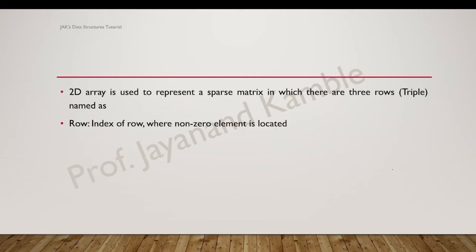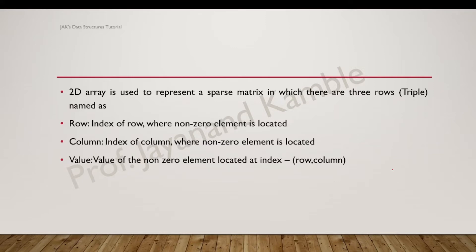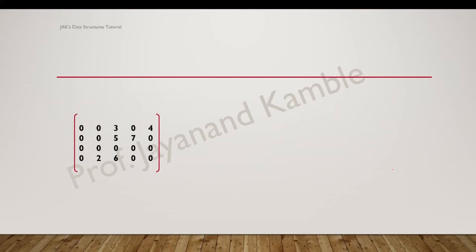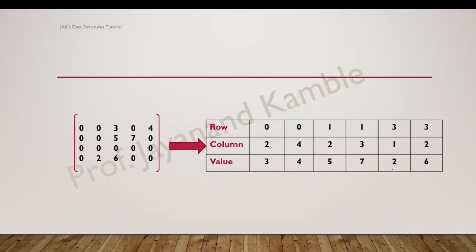We also saw the two-dimensional array representation of a sparse matrix called the triple data structure. It has three rows: row one indicates the index of the row where the nonzero element is located, the second row indicates the column index where the nonzero element is located, and the last row gives the value of the element at that row-column index.